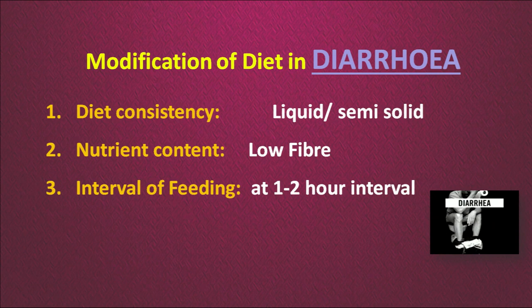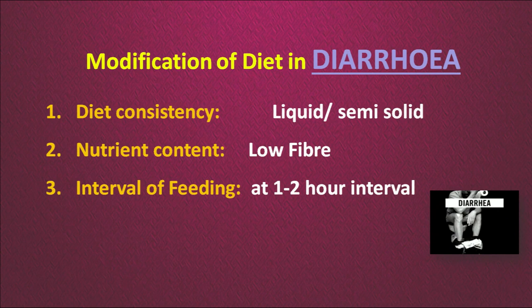Now we will talk about the modification of the diet in case of diarrhea. We will consider three things: change in the diet consistency, change in the nutrient composition, and interval of feeding. Initially a liquid diet needs to be given during diarrhea, and with the passage of recovery we can move to a semi-solid diet. We need to give very low fiber or no fiber diet, and lots of liquids including ORS. Initially, liquid diet should be given at 1 to 2 hour intervals to help recover the loss of fluids from the body.